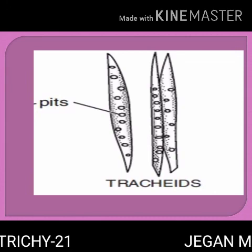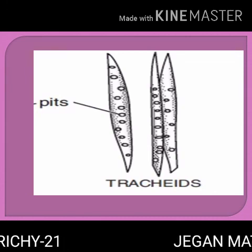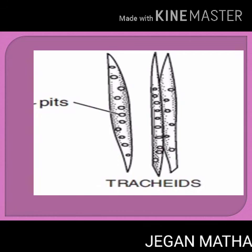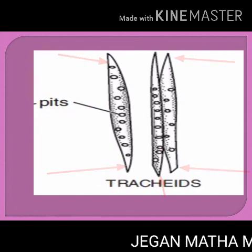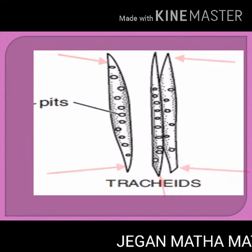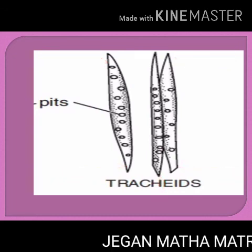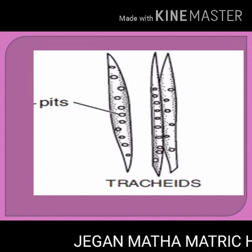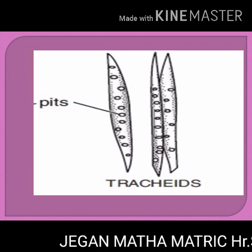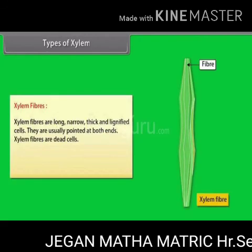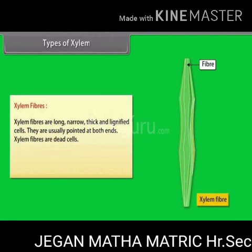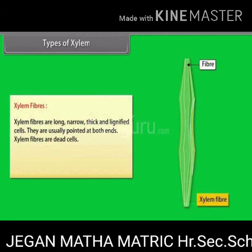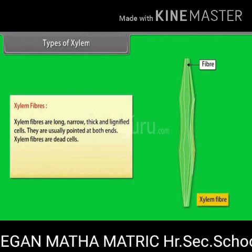Xylem tracheids are elongated or tube-like dead cells with hard, thick, and lignified walls. Their ends are tapering, blunt, or chisel-like and devoid of protoplasts. They have a large lumen without any content, and their function is conducting water and providing mechanical support to the plant. Xylem fibers are elongated, lignified, and pointed at both ends. Xylem fibers are dead cells and provide mechanical support to the plant.